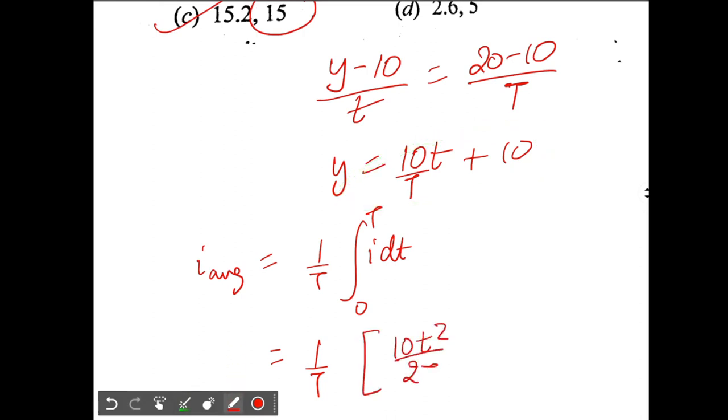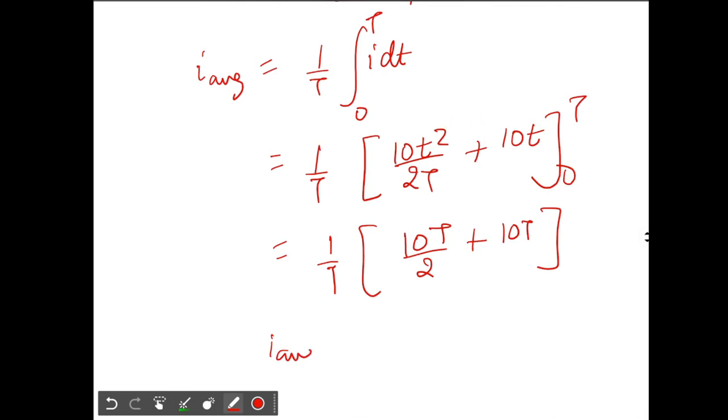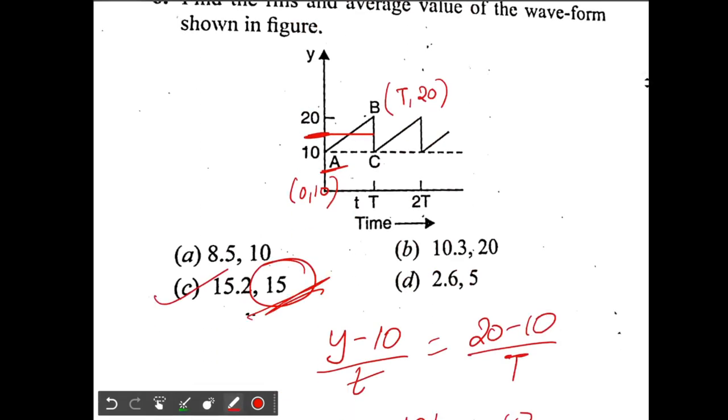10 t squared by 2T plus 10t from 0 to capital T. This will be equal to 1 by T - when you put capital T here you get 10T by 2 plus 10T, and when you put 0 the entire function becomes 0. So your i average will be equal to 5 plus 10, that is 15 ampere. See, so we found 15 ampere.